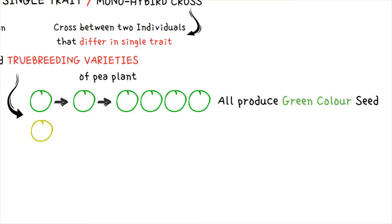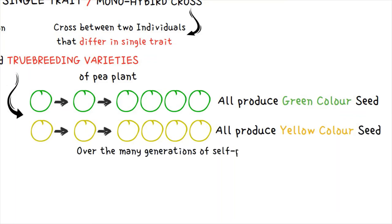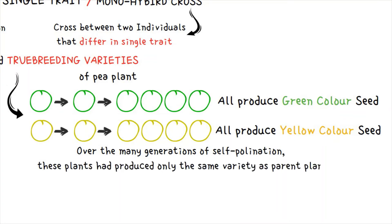Mendel continued self-pollinating until all plants across many generations produced only green color seeds. He did the same for yellow color seeds, again and again self-pollinating until all plants produced yellow color seeds across many generations. Over many generations of self-pollination, these plants produced only the same variety as the parent plant — that is called a true breeding variety.